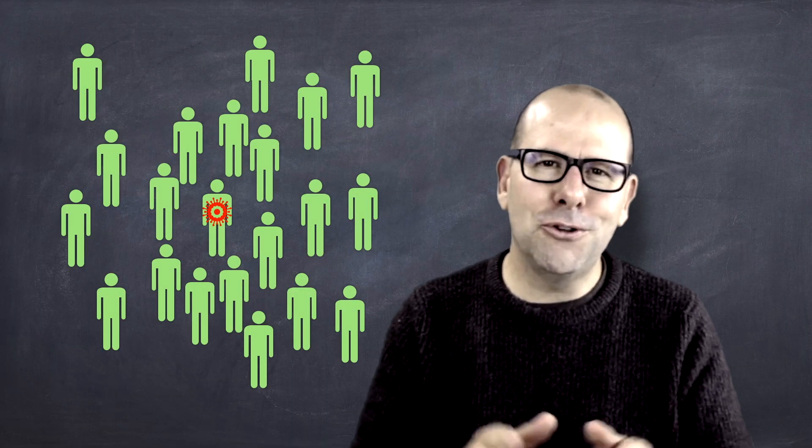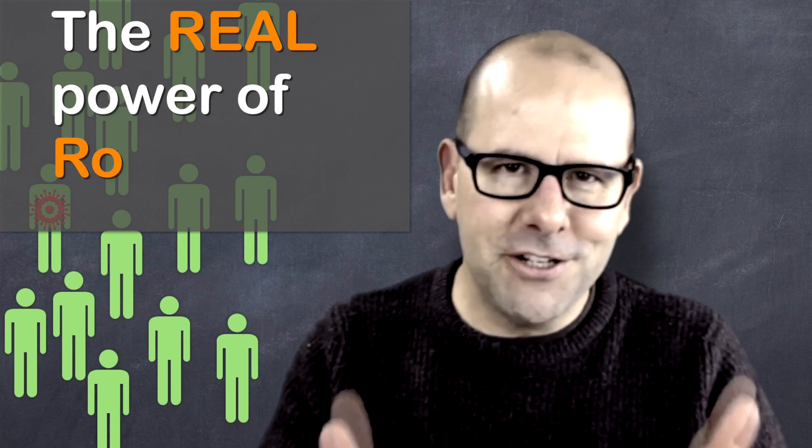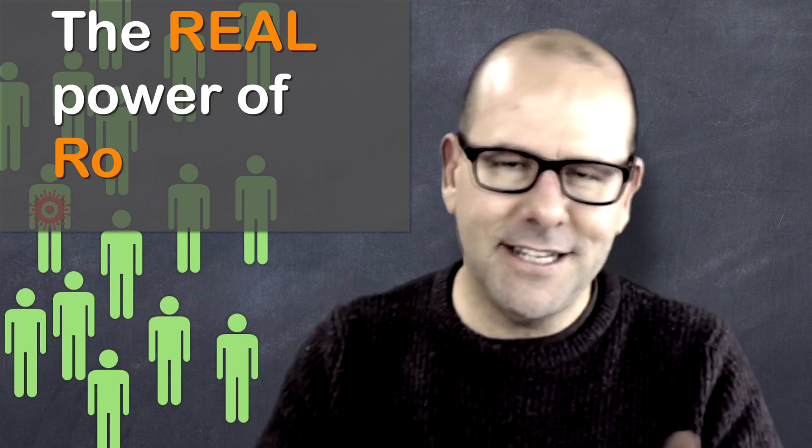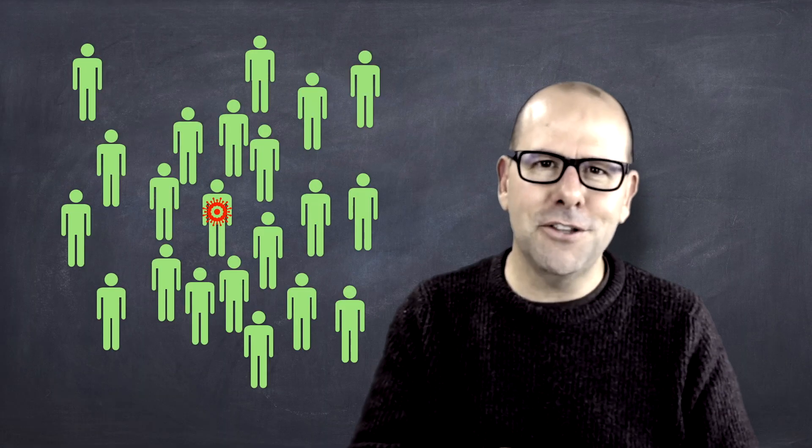In this video, I'm going to walk you through the real power of R-naught, in that R-naught helps us work out what the vaccine coverage needs to be. In other words, how many people need to be vaccinated, what proportion of the population needs to be vaccinated for us to finally beat this thing. This is the path to victory. This is how we win.